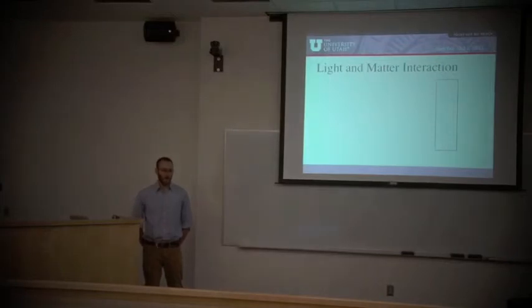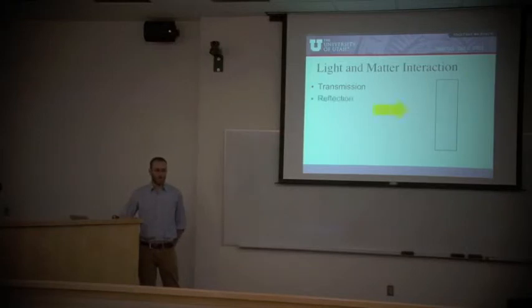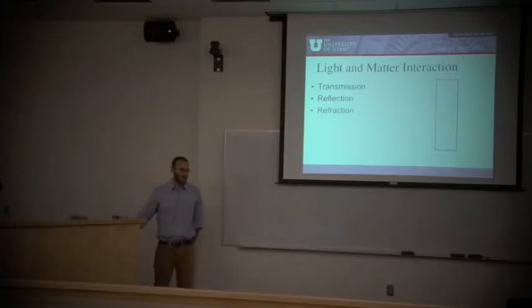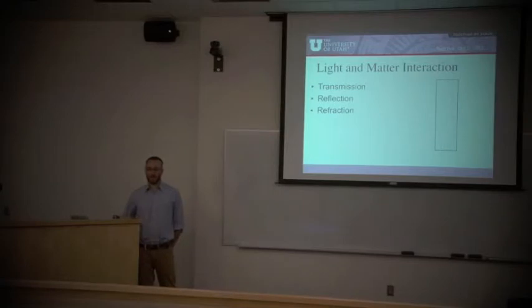Light and matter can interact in different ways. It also interacts differently depending on the energy that it carries. Simply, light can transmit through material like a window. It can reflect off of material like most metals. It can refract through the material, which is really transmission but that changes with different materials. Or it can be absorbed within the material.